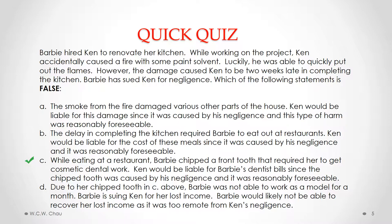D is also a true statement and therefore not the correct answer. It says that due to her chipped tooth from C above, Barbie was not able to work as a model for a month, and that Barbie would likely not be able to recover her lost income as it was too remote from Ken's negligence. The loss of modelling income is too remote — it is not reasonably foreseeable from Ken's negligence in causing the fire.